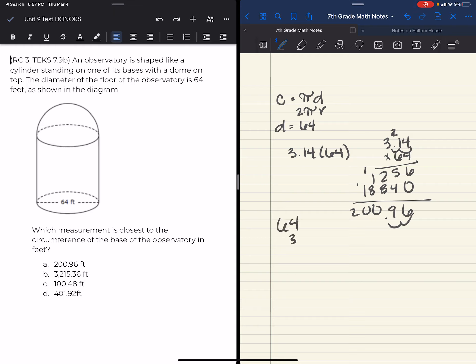And 192 is pretty close to 200 and honestly that would have been the closest answer. So really I probably could have just multiplied by 3 and known that my answer was a, 200.96 feet, not squared, just 200.96 feet.